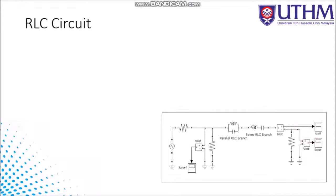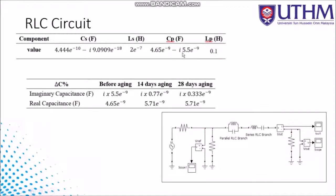This is a basic RLC circuit to represent the transformer as an RLC in parallel and in series. As shown in the table, this is the setup to represent the actual frequency response. We see that imaginary and real capacitance will change when the aging process occurs. Before aging, this is the setup. After 14 days of aging and after 28 days of aging, when we change the real and imaginary capacitance values, we can represent the actual measurement.